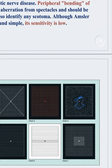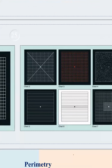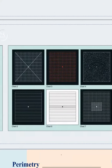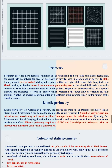Chart five has horizontal lines important for determining reading ability. Chart six is a refinement of chart five with smaller intervals between lines. Chart seven is a refinement of chart one. These are the seven cards of Amsler grid testing, which is specific for testing the central visual field because it is held at a distance of 30 to 40 cm.